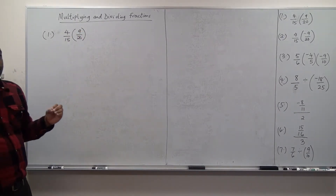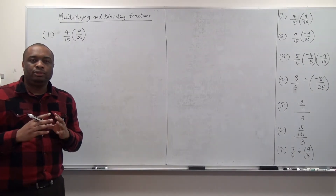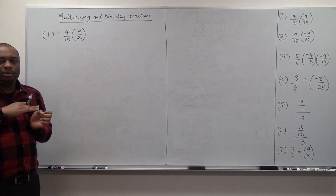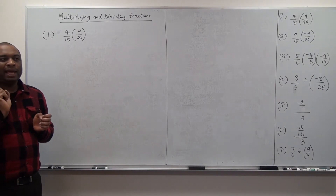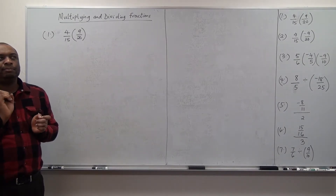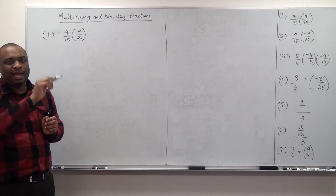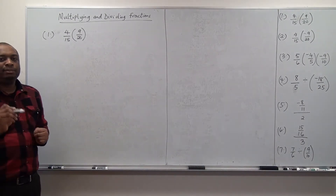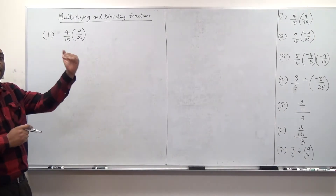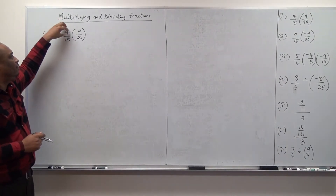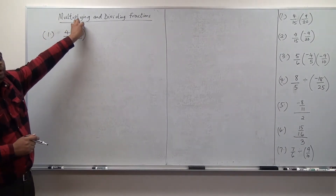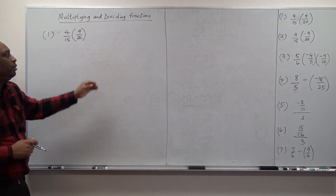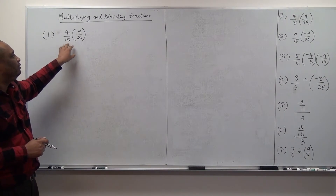When you multiply fractions, all you need to do is multiply the numerator and then multiply the denominator. Multiply along — don't multiply across. Multiplying across means cross multiplication. Just multiply along: multiply the numerator of the first fraction with the numerator of the second fraction. Similarly, multiply the denominator of the second fraction.